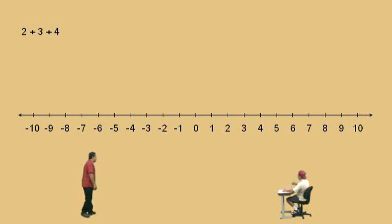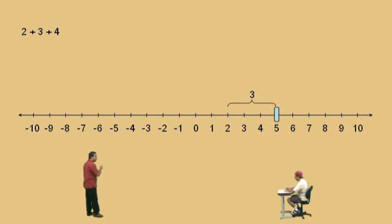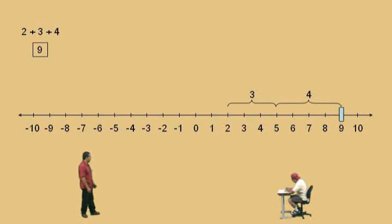So we start at two and we move to the right three times, which gives us five. And now to the five we have to add the four, so we end up at nine. Two plus three plus four is nine.